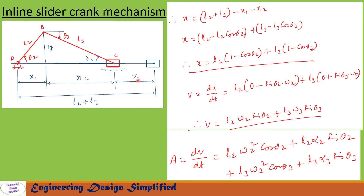Slider displacement X can be written as L2 + L3 − X1 − X2. Substituting X1 and X2, we get X = L2 − L2 cos theta2 + L3 − L3 cos theta3. After rearranging, X = L2(1 − cos theta2) + L3(1 − cos theta3). This is the equation to find the displacement of the slider. Now let us differentiate this equation with respect to time T to get the velocity of the slider.